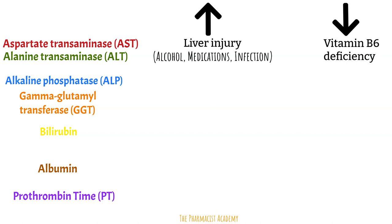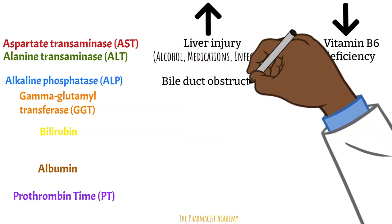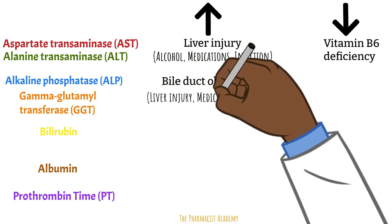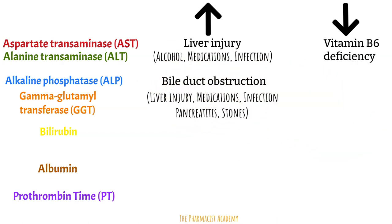An increase in ALP and GGT is usually because there is some kind of obstruction blocking bile from being released into the GI tract, also known as cholestasis. This can be due to liver injury, medications, infections, pancreatitis, or gallstones. If there are issues with the pancreas, the ALP and GGT tend to rise because they share the same duct — the bile duct from the gallbladder connects with the pancreatic duct to form the common bile duct, the passageway to release bile and digestive enzymes into the intestines. If there are any stones obstructing the flow of bile, we will see these enzymes increase. Because ALP is also found in the bones, an isolated increase in ALP may be due to bone damage, and having low levels of these enzymes can be due to rare bone diseases.